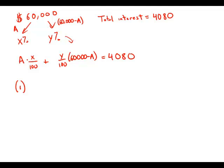Statement number one tells us that X equals 3Y over 4. By itself, combined with the original equation, we have three unknowns and two equations. Two equations and three unknowns is not enough to solve, so statement one is insufficient.